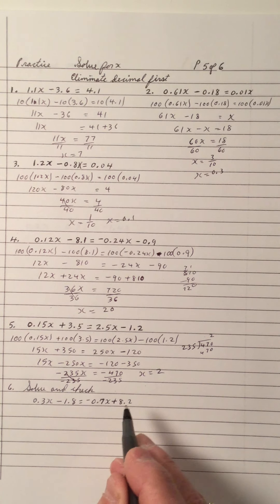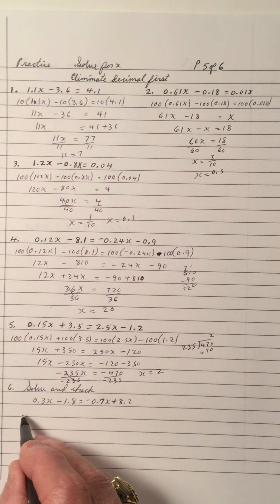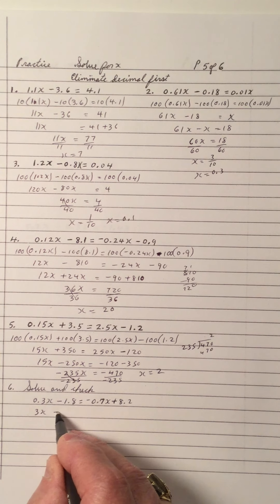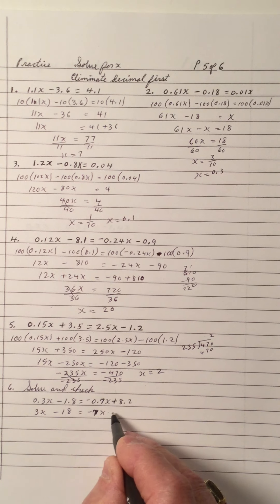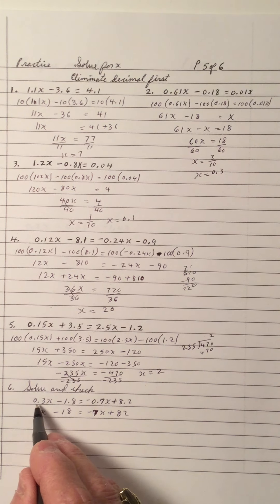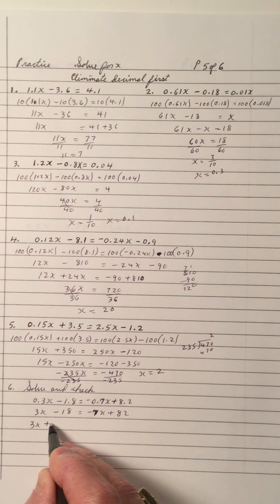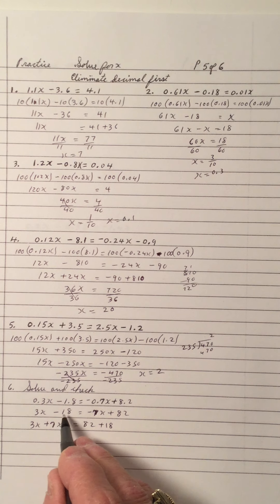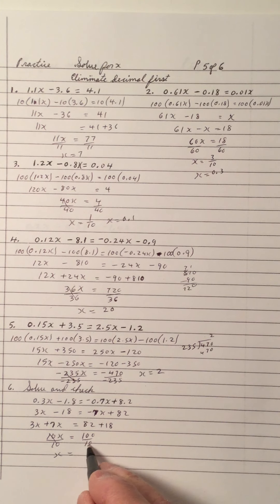One decimal place, one decimal place, one decimal place. So I'm multiplying by 10. Let's shorten it up — multiplying by 10: that's a 3, multiply by 10 is 18, multiply by 10 is negative 7x, multiply by 10 gives 82. When you multiply by 10, the decimal moves one place. Then you get 3x plus 7x equals 82 plus 18. The negative 7x becomes plus, negative 18 becomes plus 18. That's 10x equals 100. Then you divide by 10 — the 10's cancel — 100 divided by 10 is 10. So the answer is 10.